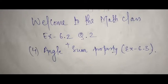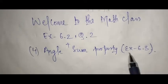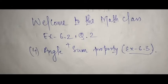So now in this class, we are going to start with question number two from Exercise 6.2. Along with that, we will also proceed to the fourth property, that is the angle sum property. If you look at the list, number four is the angle sum property. With that, we will proceed to Exercise 6.3 also. So stay with me till the end of the video.